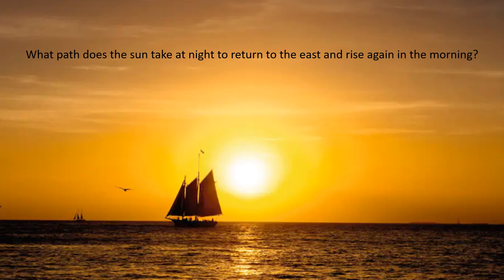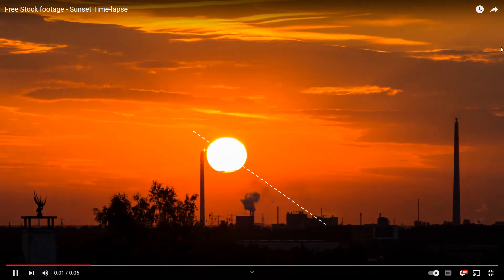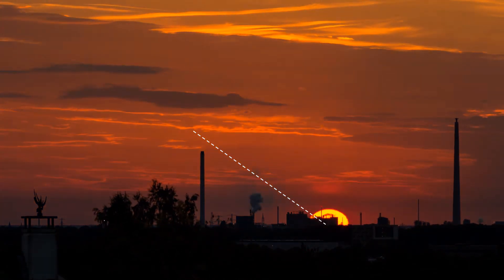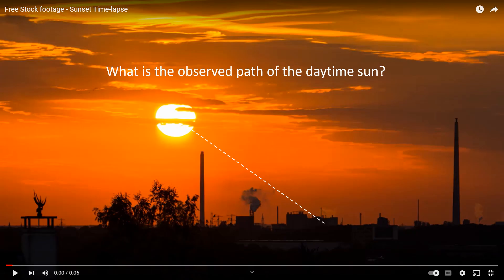In part one I asked a very simple question: what path does the Sun take at night to return to the east to rise again in the morning? So I use this time-lapse to determine the angle that the Sun sets in relationship to the horizon. And I asked another simple question, what is the observed path of the daytime Sun?